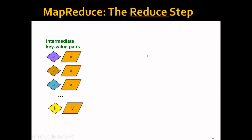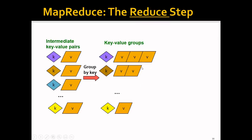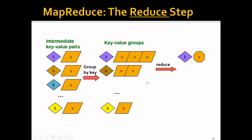In the Reduce step, we first group all these key-value pairs by key, and they become grouped together. For example, if we have several key-value pairs with the same key, they get grouped together, and then we have a Reduce function operate on each key-value group, reducing the list of values into one single value. In the warm-up task, it basically sums up a lot of ones to get the total number of occurrences of each word. In general, this function can be anything — taking the average, maximum, minimum, or even the product. We do the same Reduce function for different key-value groups, and so on.